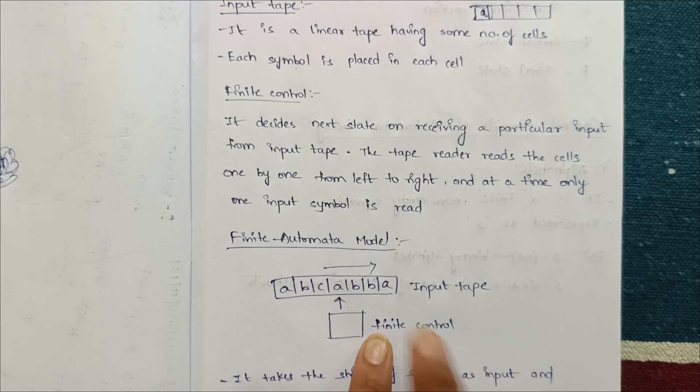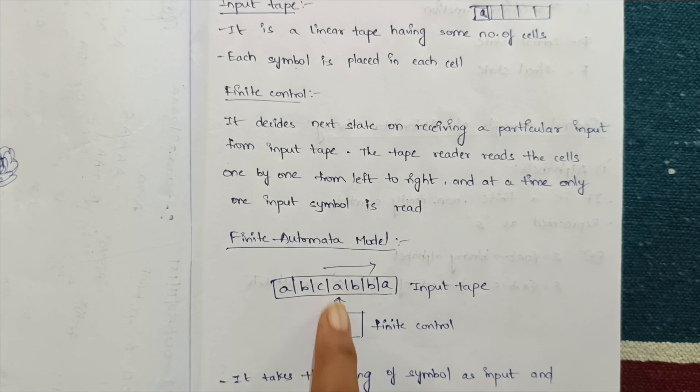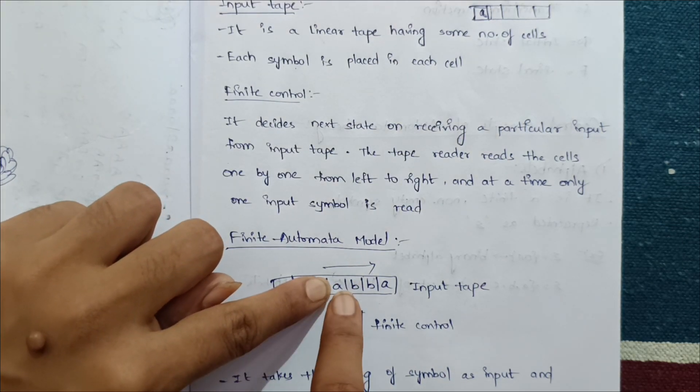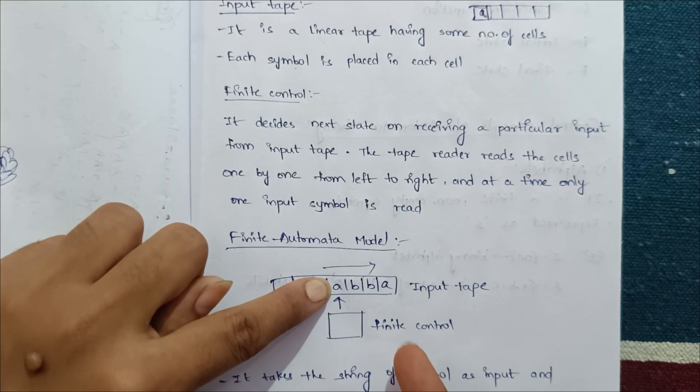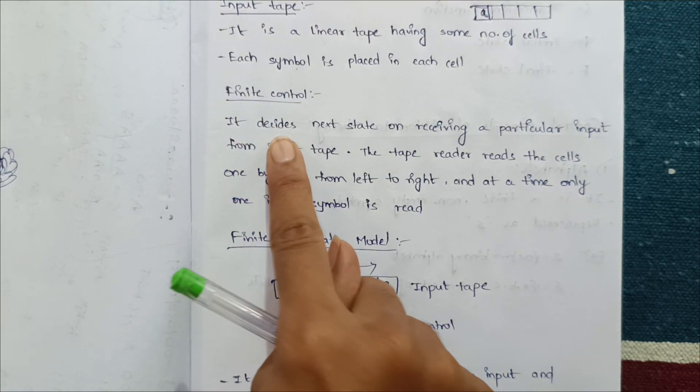Finite control in this study decides the next state by taking the input symbol. The input symbol from the finite automata, which decides the next state. So it decides the next state.